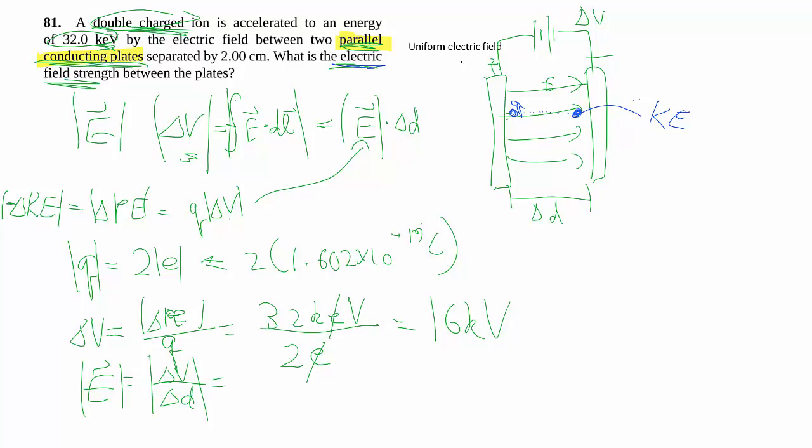Again, we're just going to put absolute value signs everywhere so we're dropping those negative signs if it ever comes up. Then we have 16 kilovolts divided by the separation of the distance that you accelerate over, which is 0.02 meters, and that works out to be so many volts per meter, which is the same unit as newtons per coulomb, which is what to expect for my electric field.